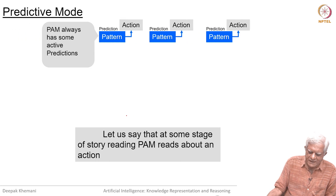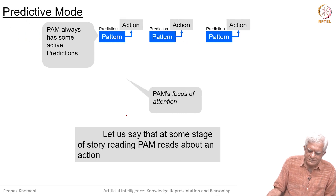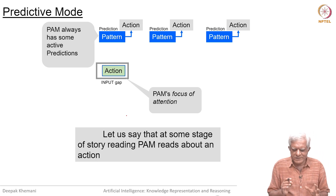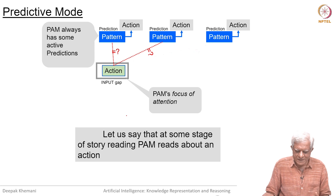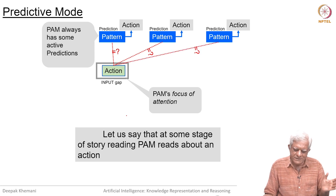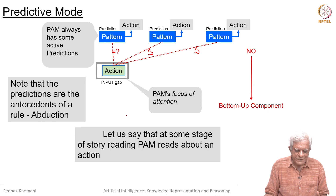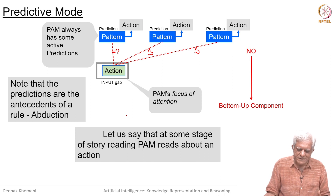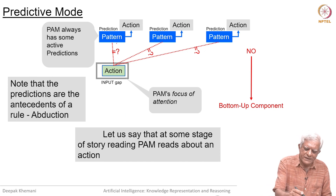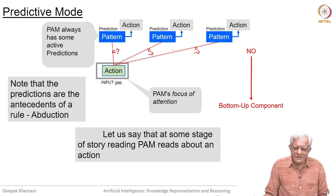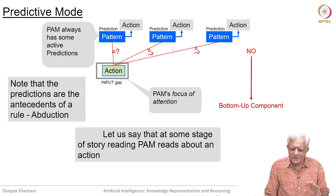Let us say that at some stage of story reading, PAM reads about an action. PAM has something called focus. There is a rectangular box called the input gap — the gap is like a slot — and anything that is being read is fed into this gap. PAM is always looking at this gap to see what is the next input. So let us say it reads about an action. The predictive mode will look at each of the predictions on top — there are three predictions — to see if the input gap contents match the pattern or not. It tries them one by one, and if it does not match, then it will go to the bottom-up mode.